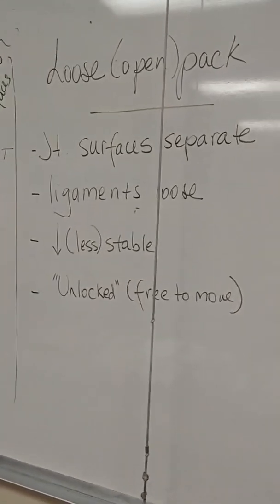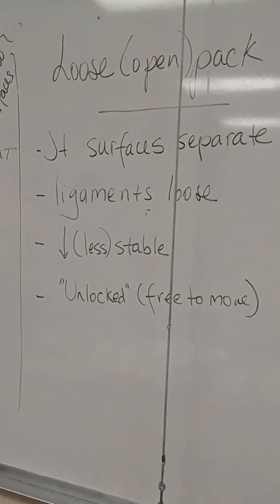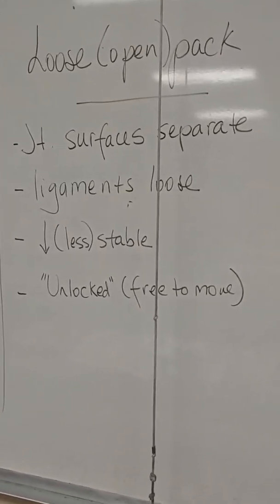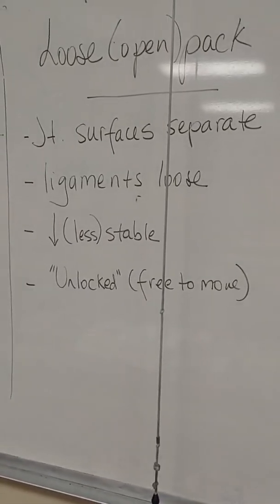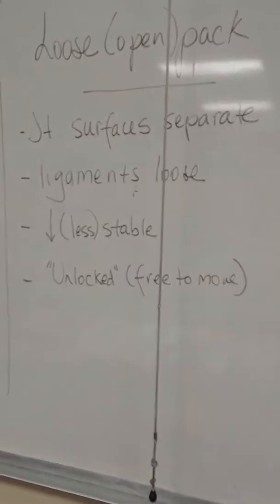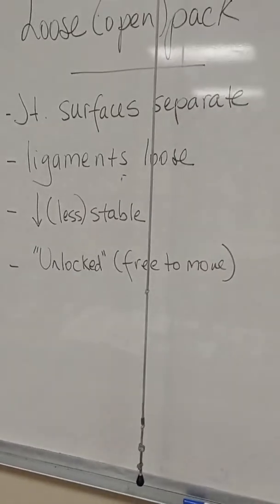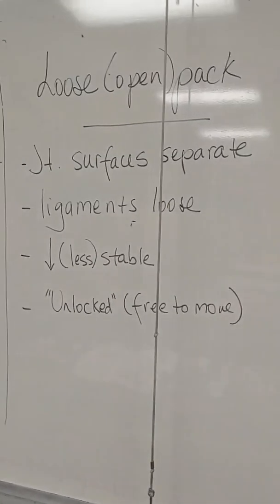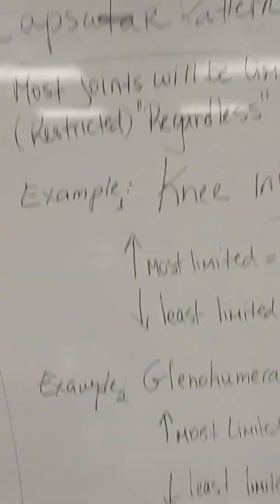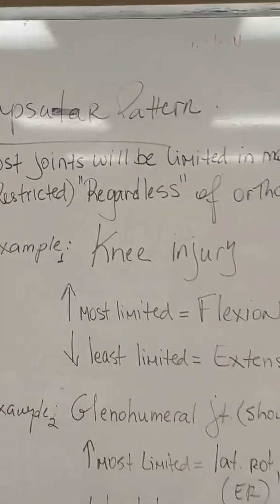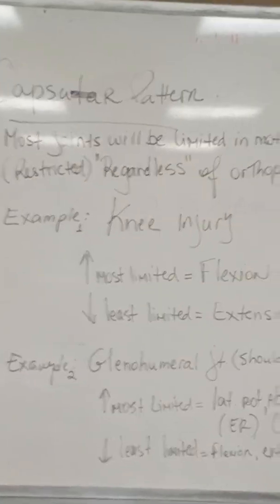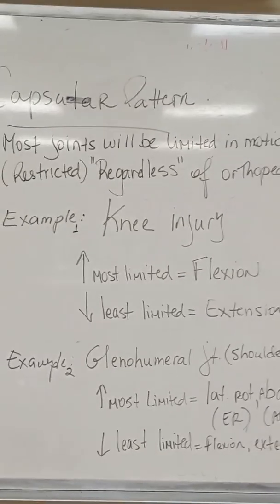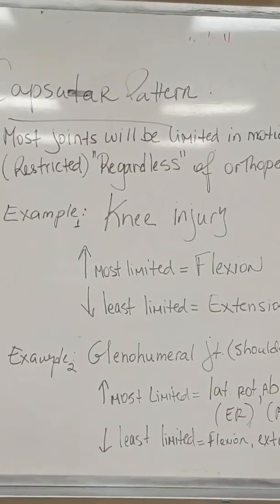Conversely, in an open pack position, the joint surfaces are separate, the ligaments are more loose, and the joint is less stable. You can call it 'unlocked,' or think of it as free to move. Capsular pattern refers to limitations that your joints are going to show.